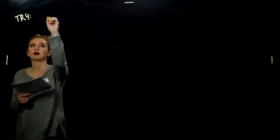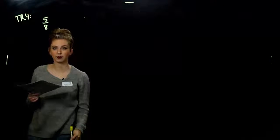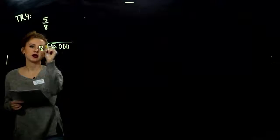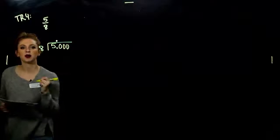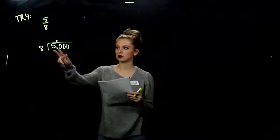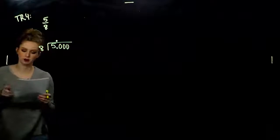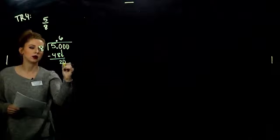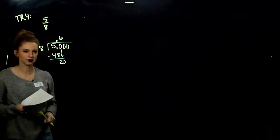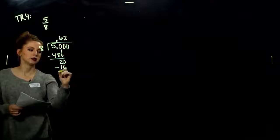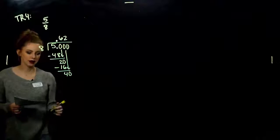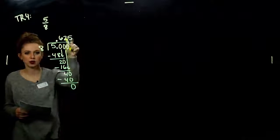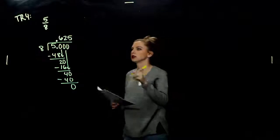Now one for you to try: convert 5 divided by 8 into decimal notation. So I'm taking 5 — the decimal point is right there, I'll add some zeros. I'm dividing by 8, and my decimal point in the quotient is right above. 8 doesn't go into 5. 8 into 50 without going over? 6. 6 times 8 gives me 48, remainder 2. Bringing down the 0: 8 into 20 is 2 times — 8 times 2 is 16, remainder 4. 8 into 40? Exactly 5. Remainder of 0 — it's terminating. It's exactly equal to 0.625.